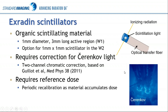We do have to correct for Cherenkov light. This is a classic Cherenkov picture of looking into a reactor coolant pool. Cherenkov light is light generated by electrons traveling faster than the speed of light in the medium — it's kind of a light shock wave, just like a sonic boom is a sound shock wave from a jet traveling faster than the speed of sound. This is generated in our optical transfer fiber, so it is a field size dependent stem effect. We correct for this using a two-channel chromatic correction based on a publication from Matthew Gouyot et al.